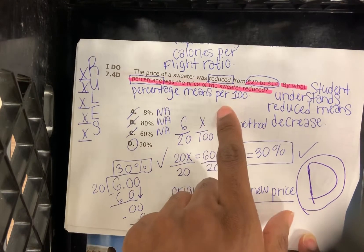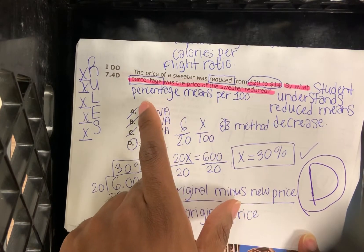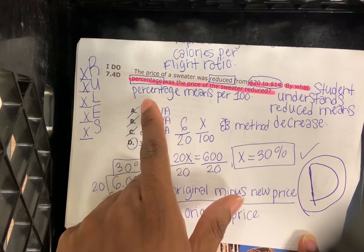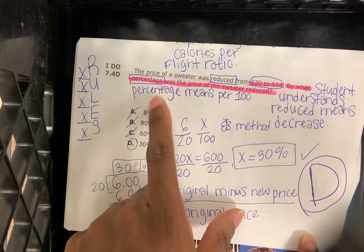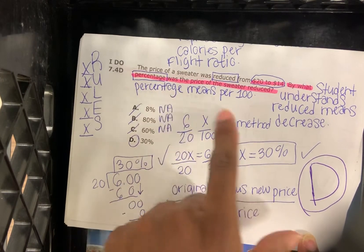Percentage means per 100. Like a century is 100 years. A centurion is a person that's 100 years old. Percentage is per 100.